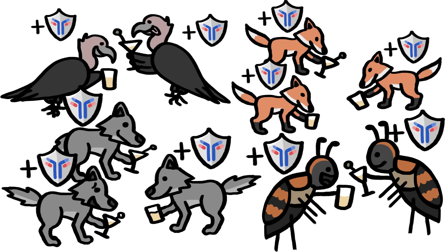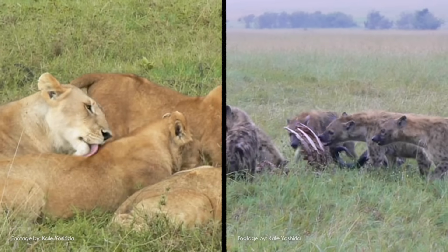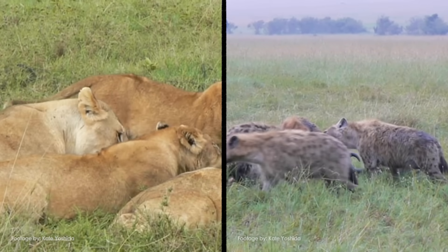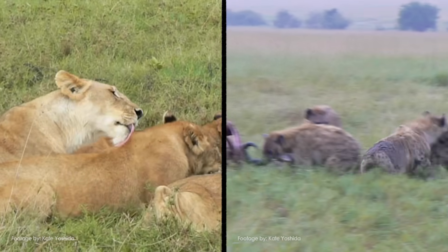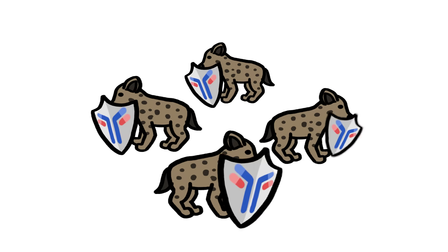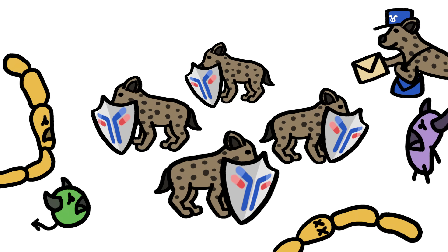Socializing can also give scavengers an immune boost. Hyenas and lions, for instance, likely pass small doses of germs around as they groom, eat, and compete with each other, which may help build up group-wide immunity to toxins like anthrax.